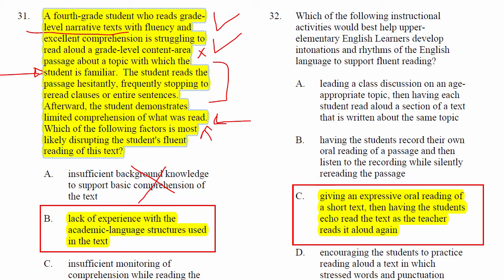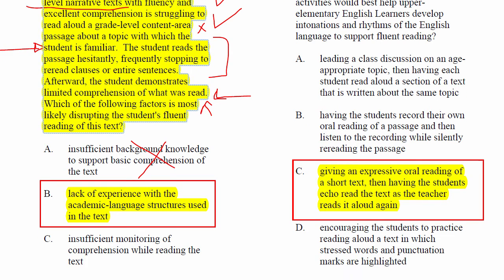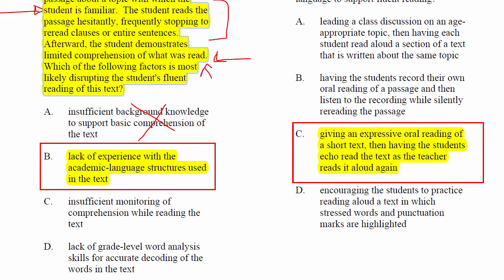So the correct response is B: lack of experience with academic language structures used in the text. If we're looking at conditions — somebody who can't read something fluently like expository text but can with narrative text, and is not going back and rereading things at just the word level or trying to decode something and failing — this is a fluent reader who is going back and looking through sentences and getting lost.